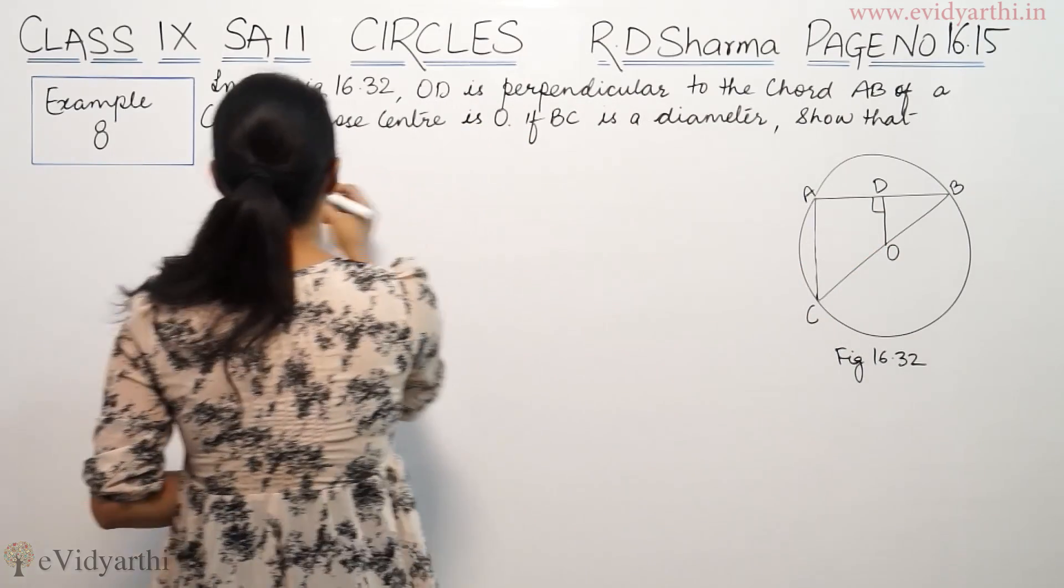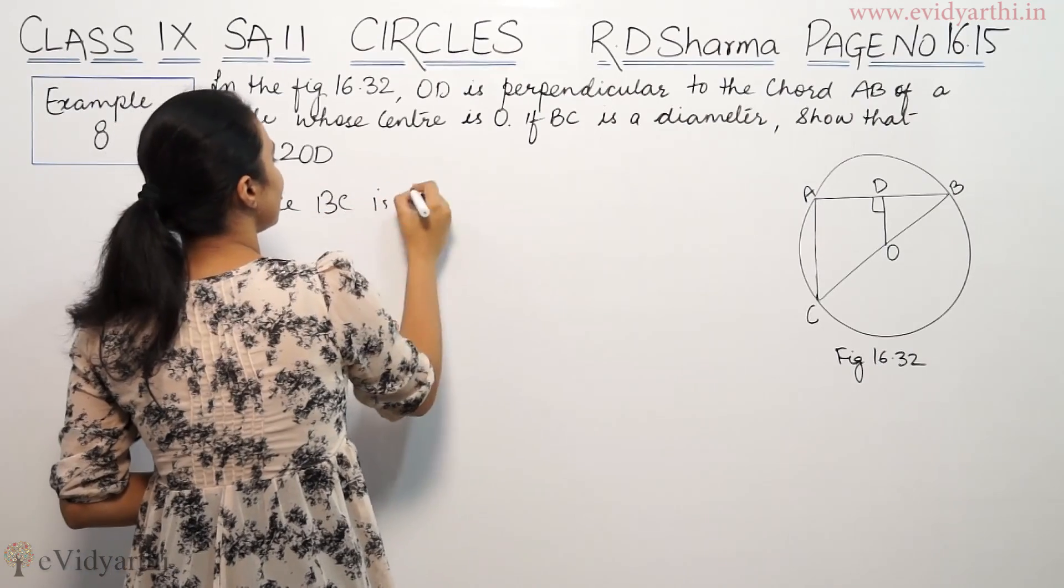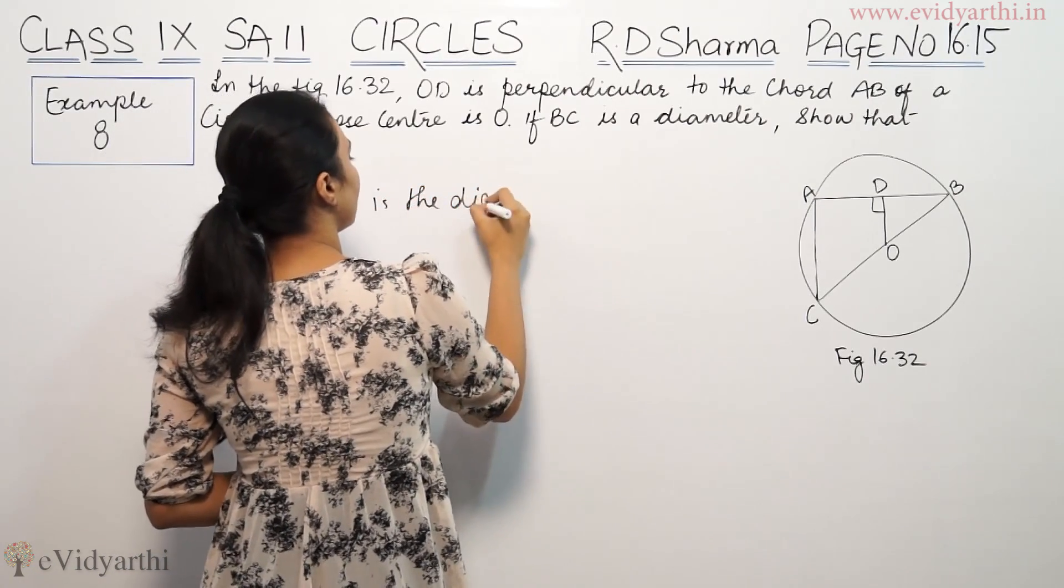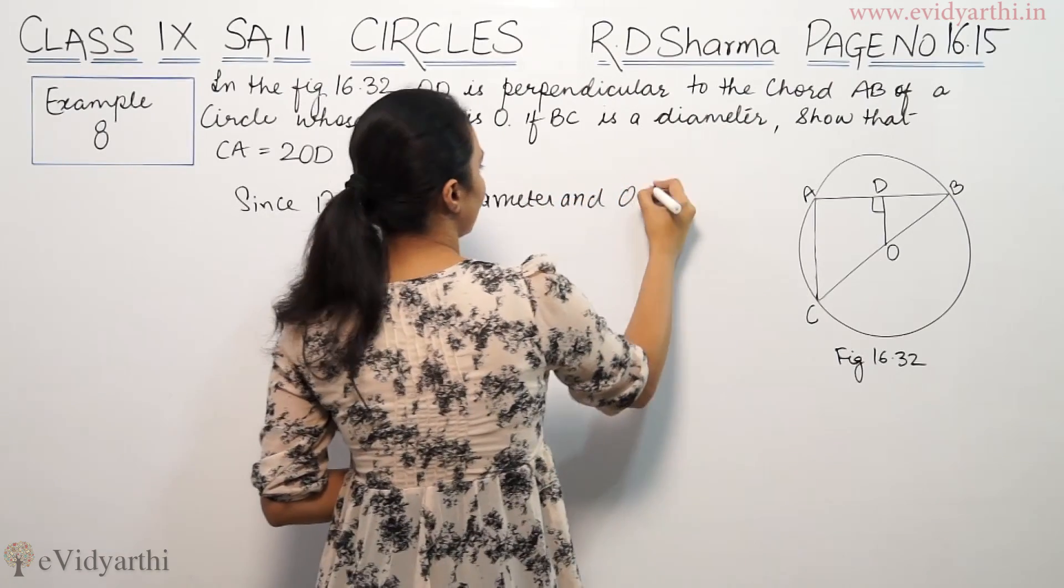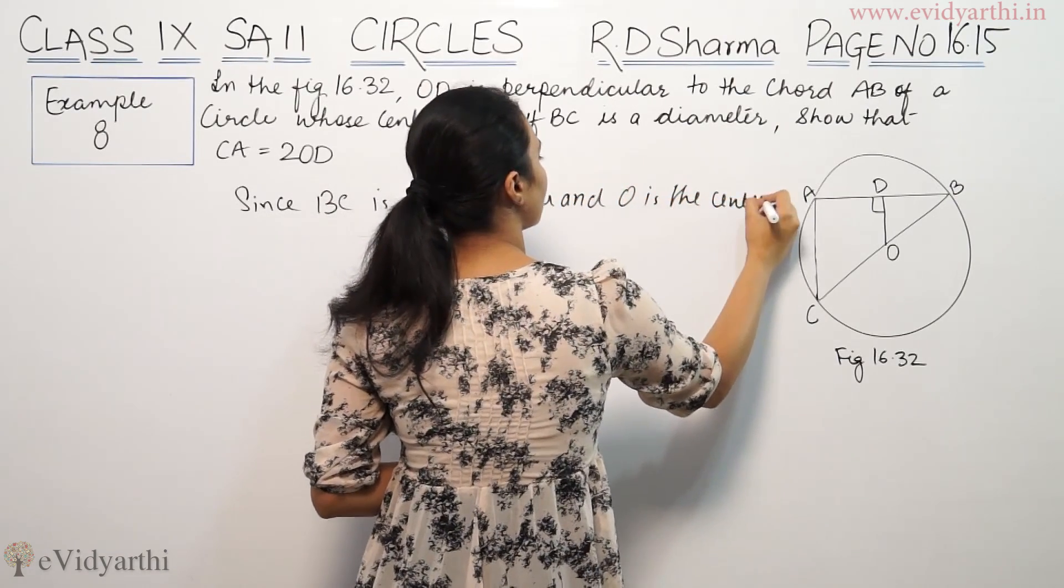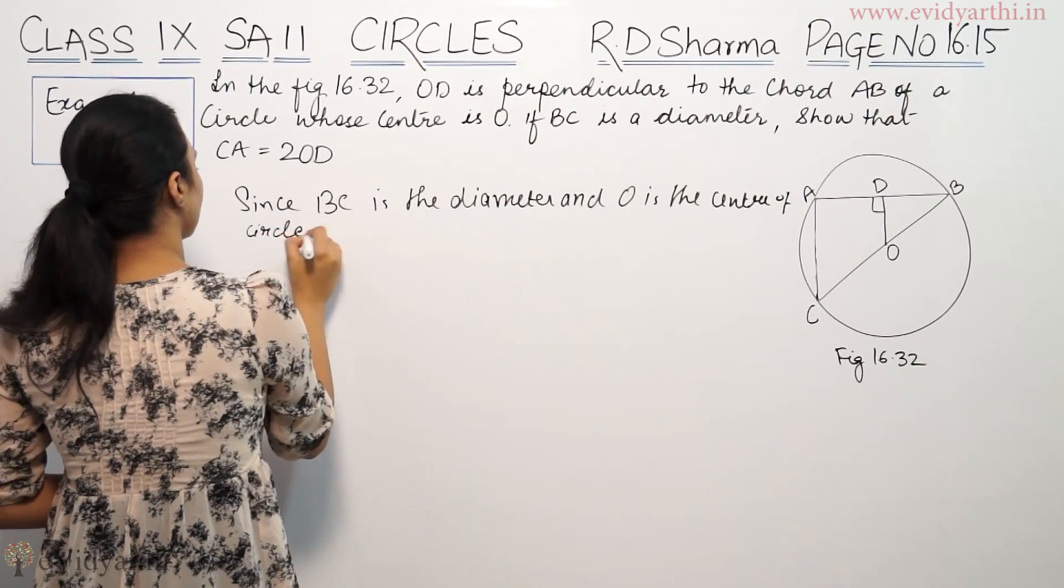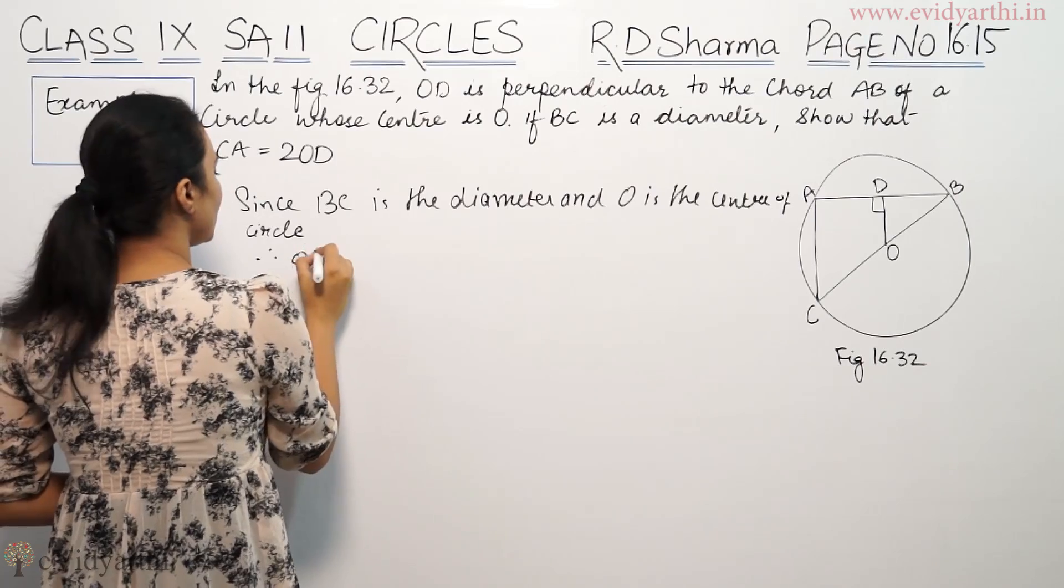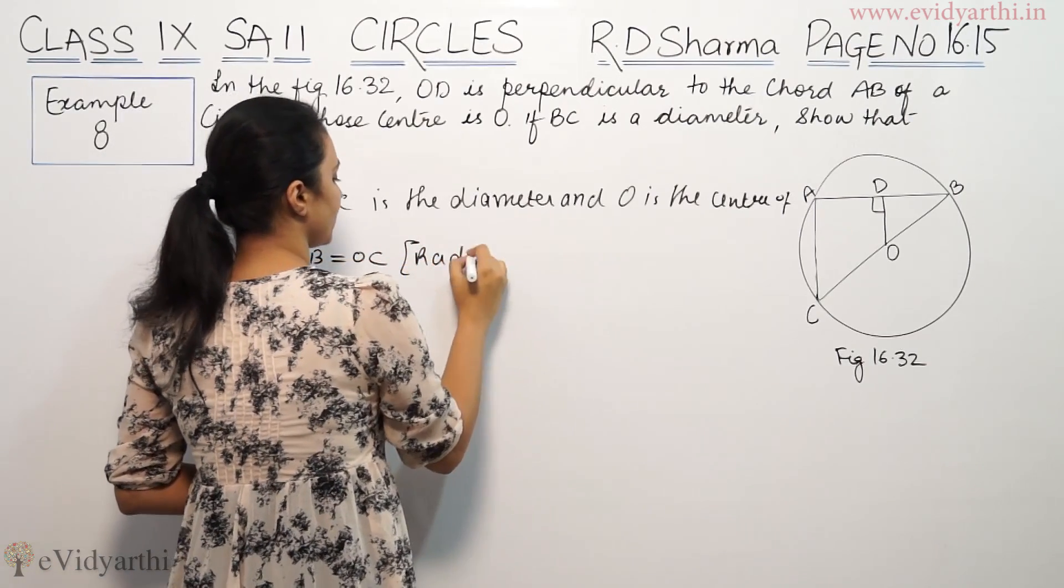So we will write: Since BC is the diameter and O is the center of circle, therefore OB is equal to OC, radii of circle.